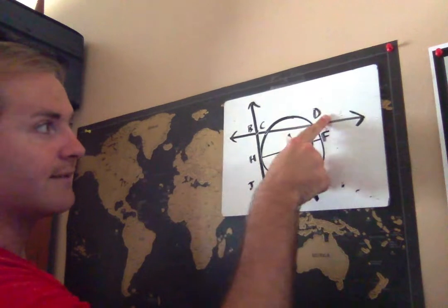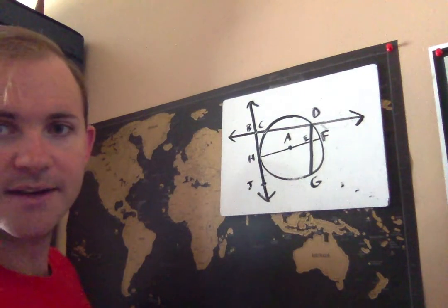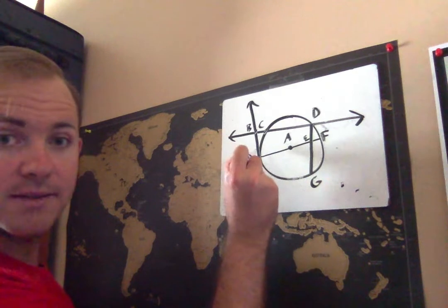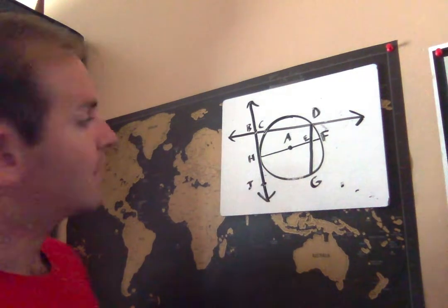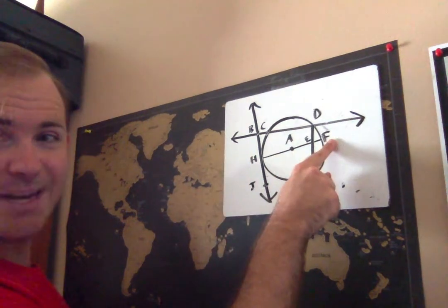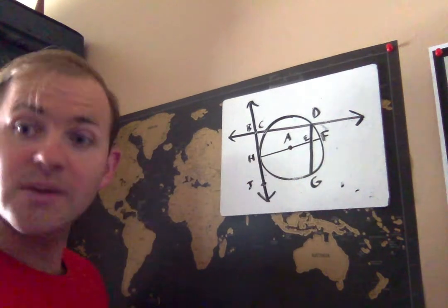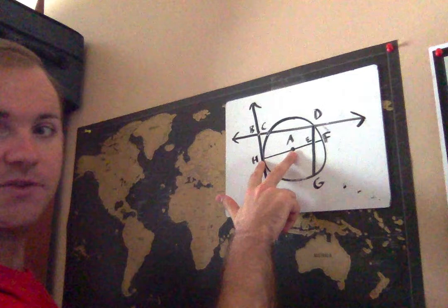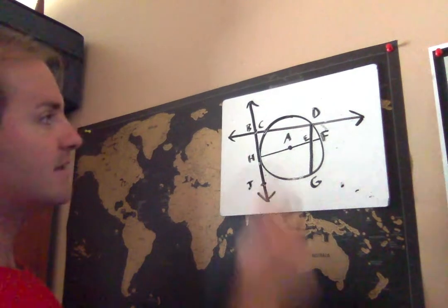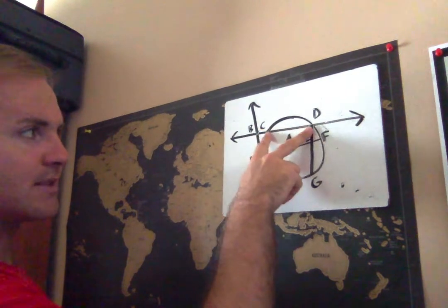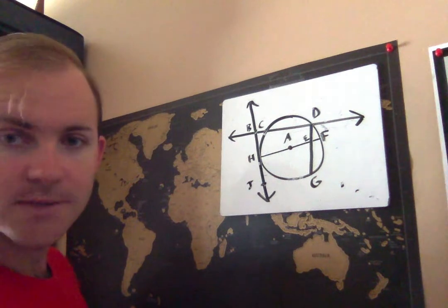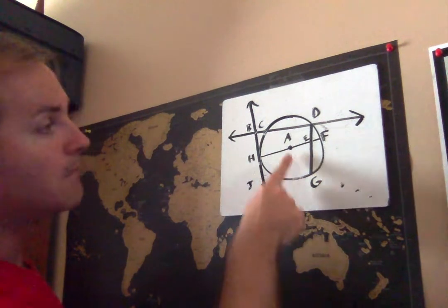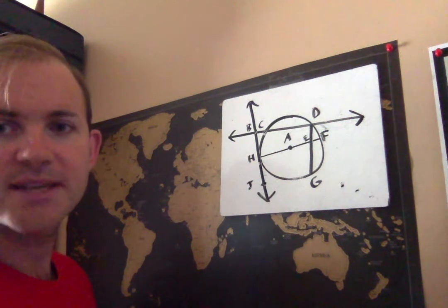Line BD, because it's a line and it goes through the circle twice, would be classified as a secant line. Line BJ by contrast only touches the circle once and so that would be a tangent line. Segment HF goes all the way across the circle and it's a segment, but it happens to pass through the center. So even though yes it is a chord, the better way of describing that would be a diameter. HA only goes halfway across the circle so that would be a radius.